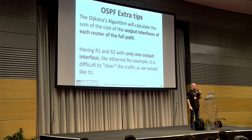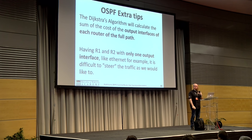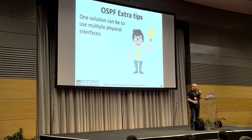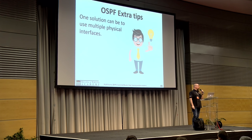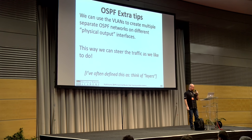Think about the Dijkstra algorithm: it calculates the sum of the cost of the output interfaces of each router along the full path. With router 1 and router 2 each having only one output interface — like a single Ethernet — it is difficult to steer traffic as desired. One solution is to use multiple physical or virtual interfaces, such as VLANs, to create multiple separate OSPF networks on different physical output interfaces.